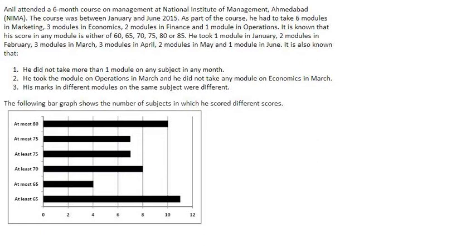It is also known that his score in any module is either 60, 65, 70, 75, 80, or 85. He took 1 module in January, 2 in February, 3 in March, 3 in April, 2 in May and 1 in June. It is also known that he did not take more than 1 module on any subject in any month. He took the module on operations in March and he did not take any module on economics in March.